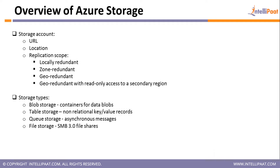Another option is geo redundant storage, where your data replicates between two different regions. In this case if a failure occurs in the primary region you can fail over to the secondary region. The last option is read-access geo redundant storage, where your data replicates asynchronously between two regions and synchronously within a region.